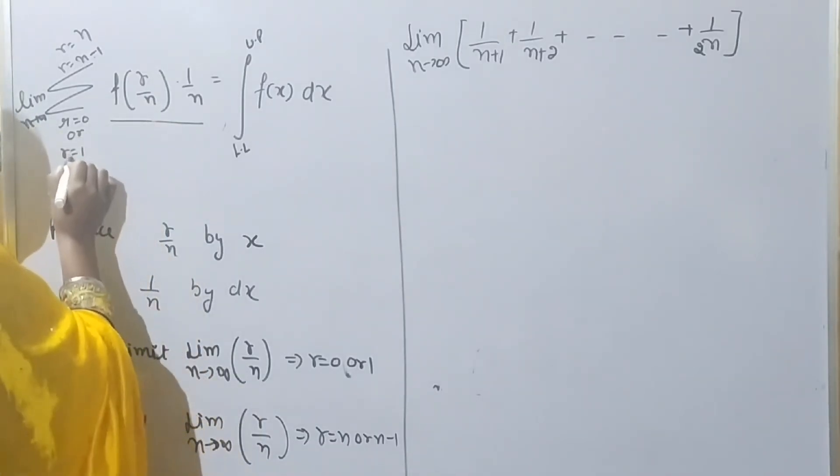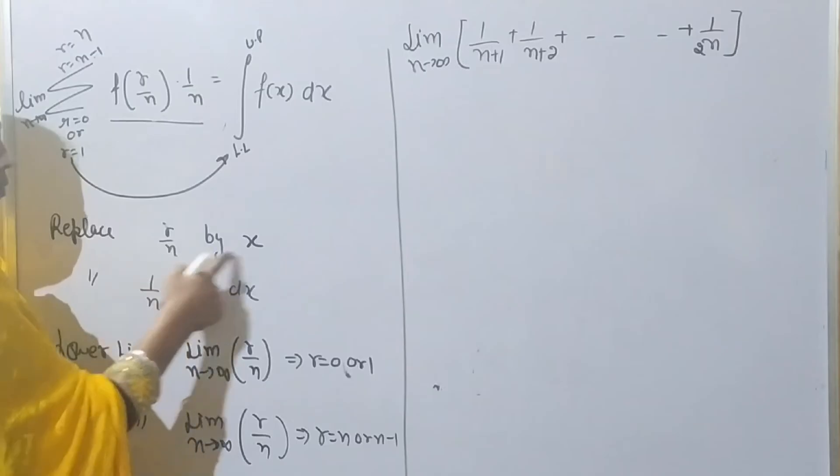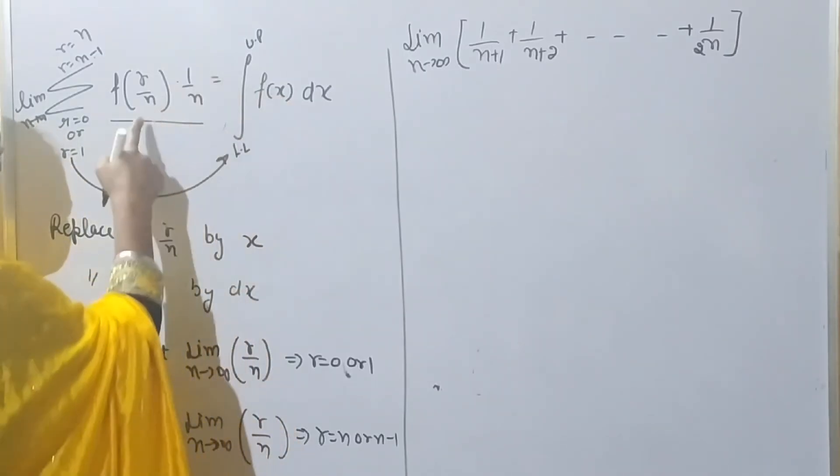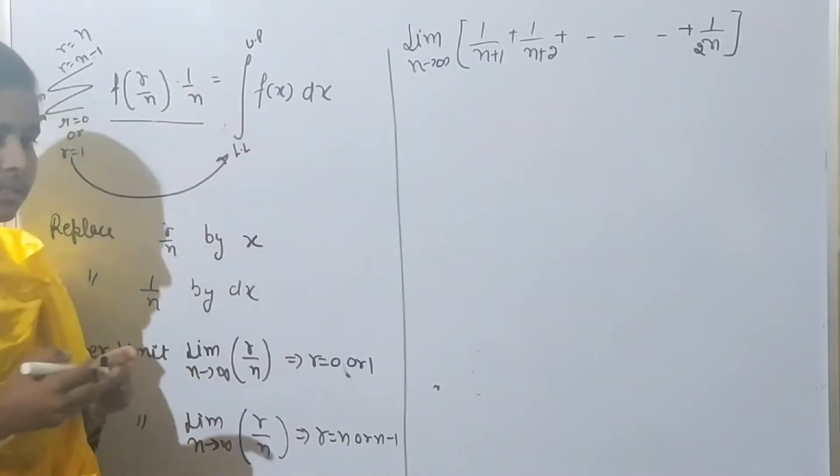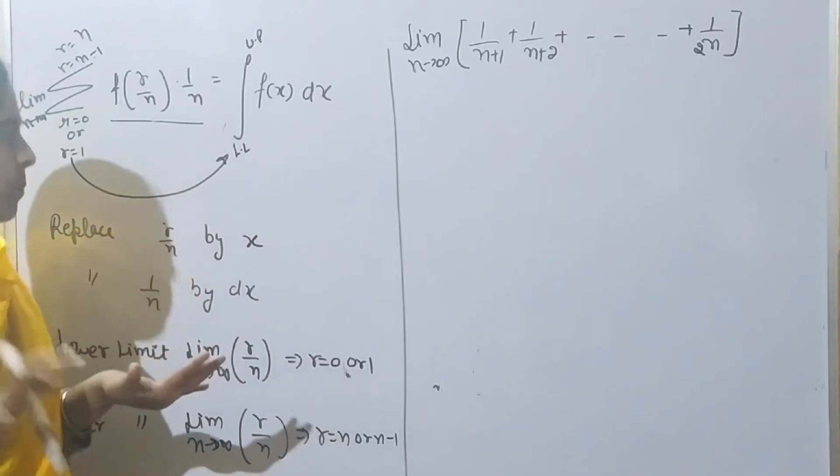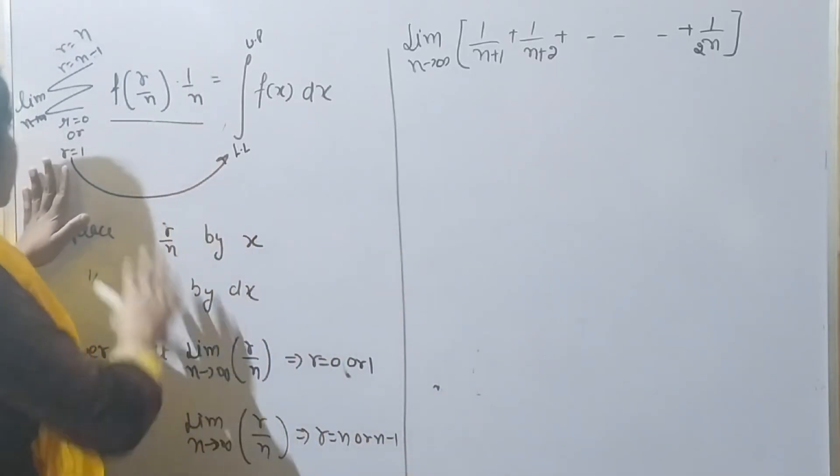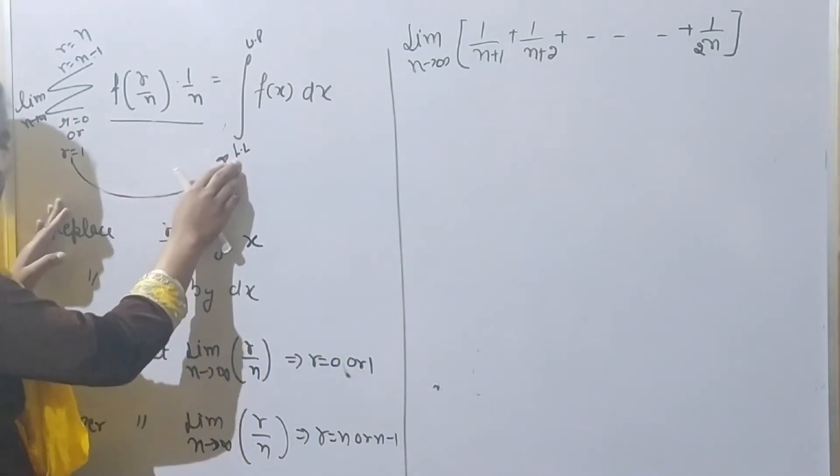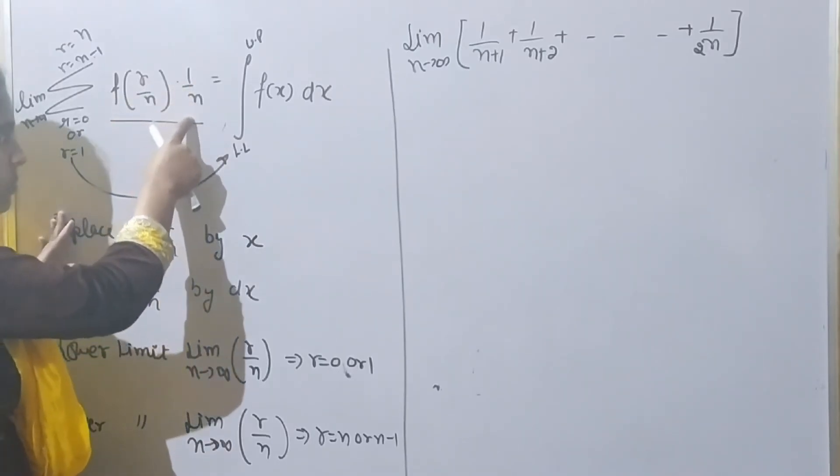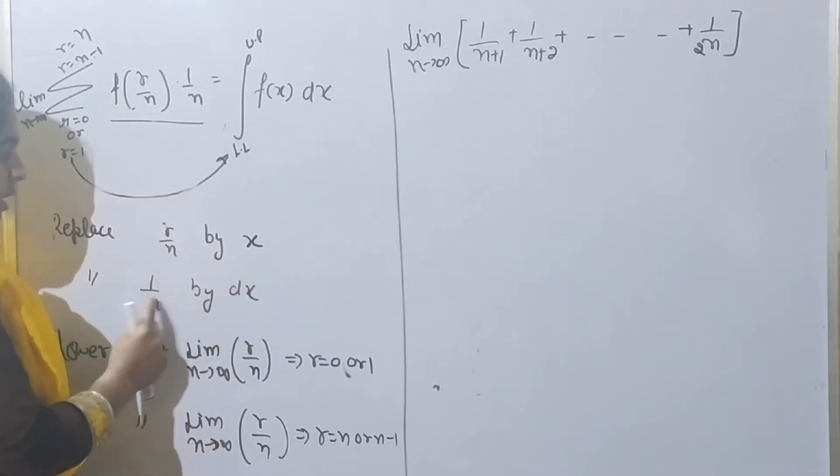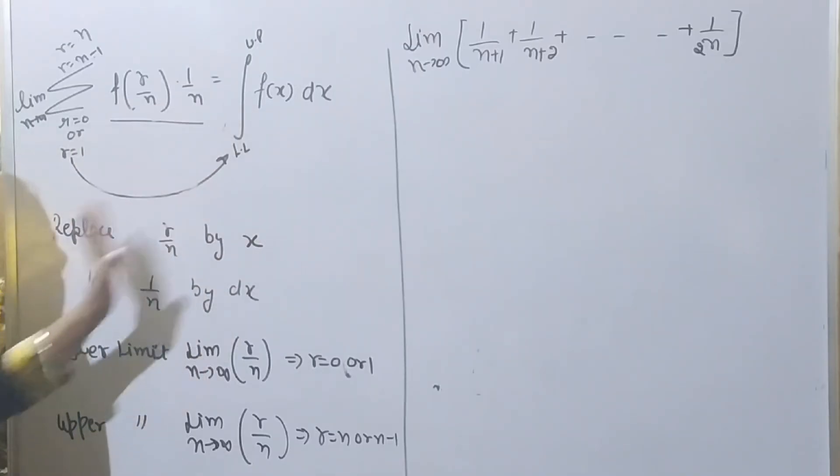Given a series, you make it in this form: f(r/n) times (1/n). When you have an infinite series, write it in terms of function f(r/n), then write 1 by n, then write the limit. Replace r by n with x, and where 1 by n appears, write dx. These three steps are the main approach. When you write the summation, you will write the integration.